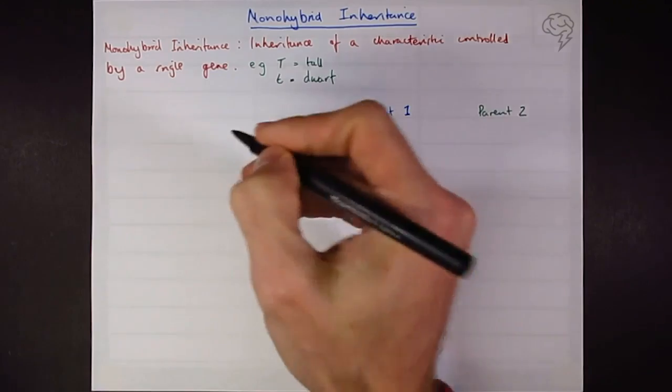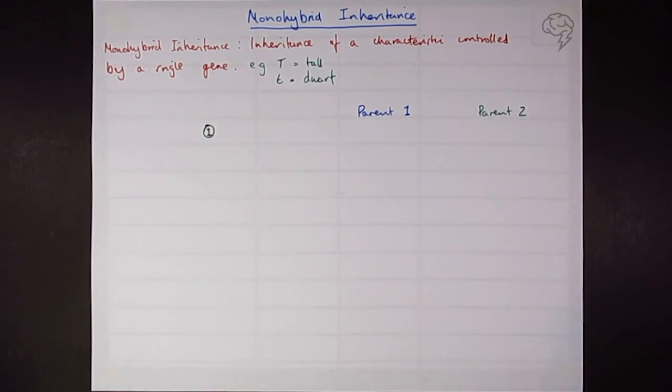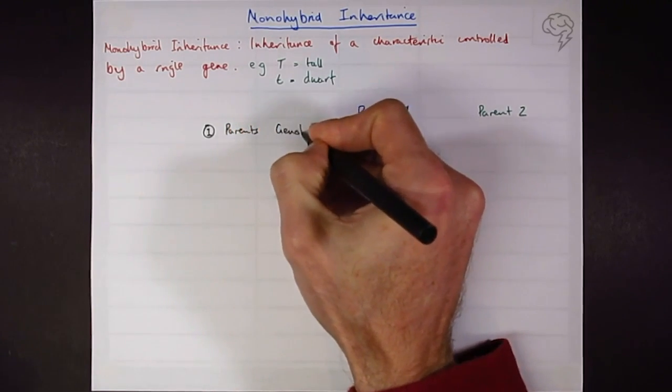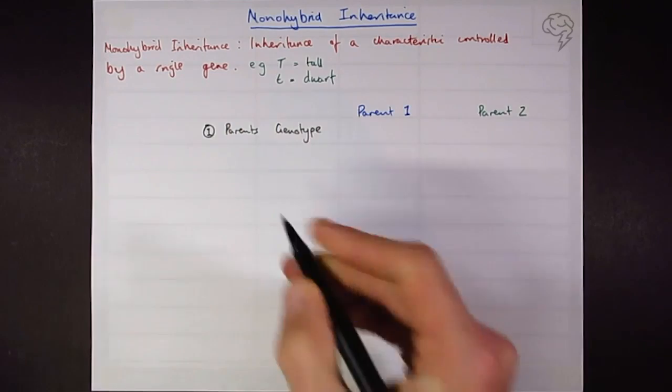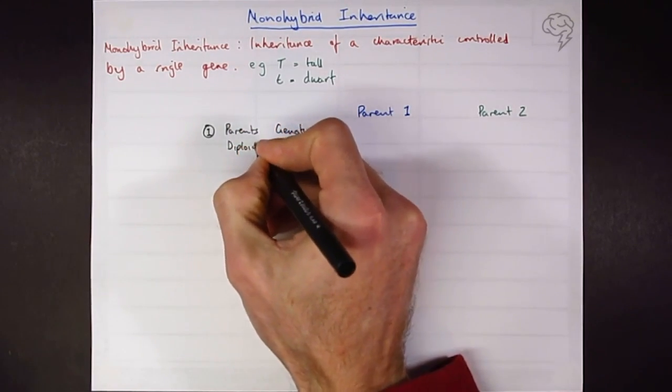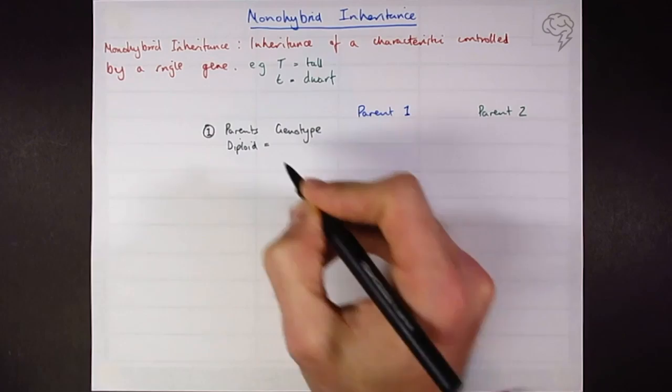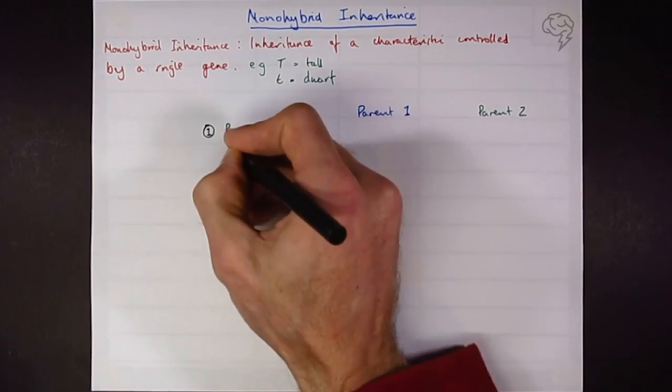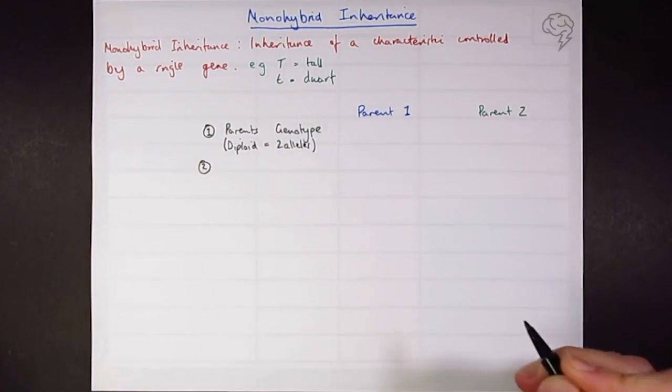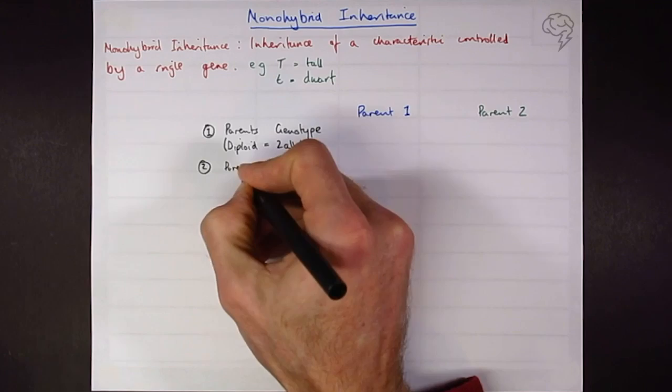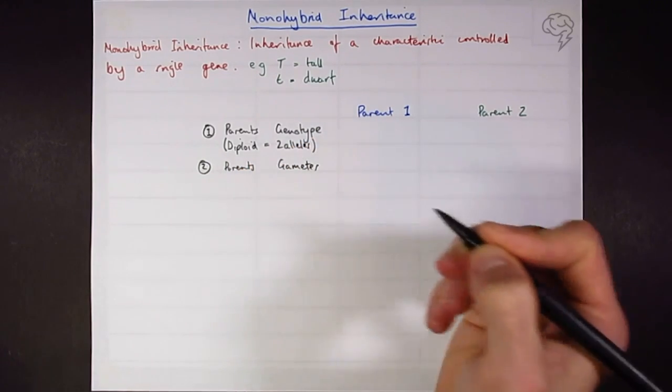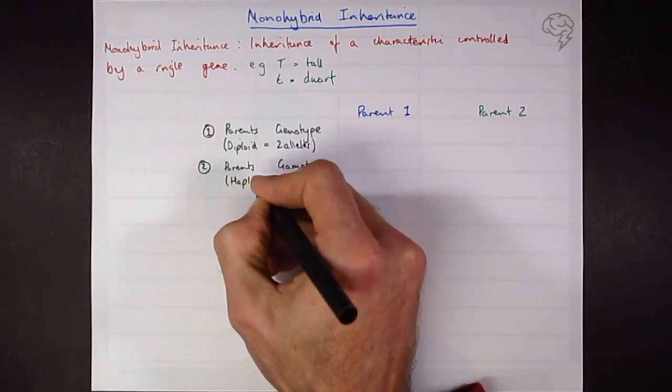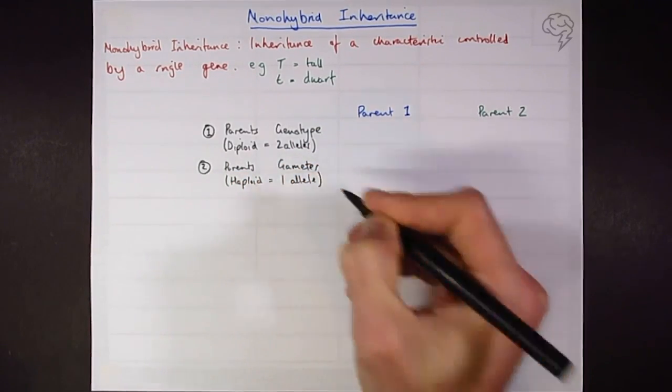Now, as you progress through these, there's basically two stages you're going to need to know at each step of the way. The parent's genotype, first of all. So remember, parents are going to be diploid, which means they're going to have two homologous chromosomes and one allele on each. So they're going to have two alleles. The second thing we're going to need to work out all the time here is going to be the parent's gametes. And we're going to need to, they are obviously haploid. They've done meiosis. And so they're going to have one allele.